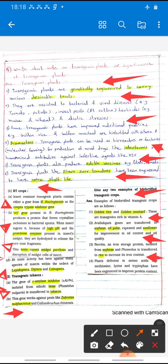Ferritin, an iron storage protein, is isolated from soybean and transferred into rice to increase iron content.